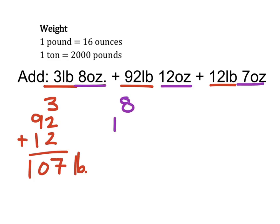is 8 ounces, 12 ounces, and 7 ounces, which comes to 27 ounces. Now if this was all there was